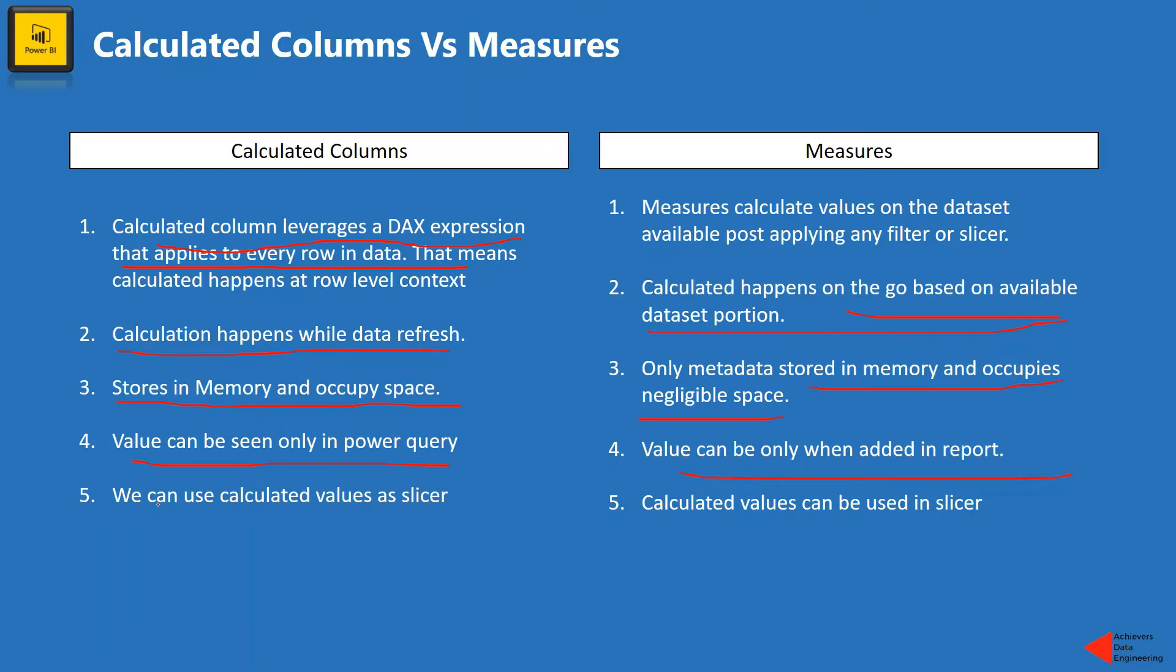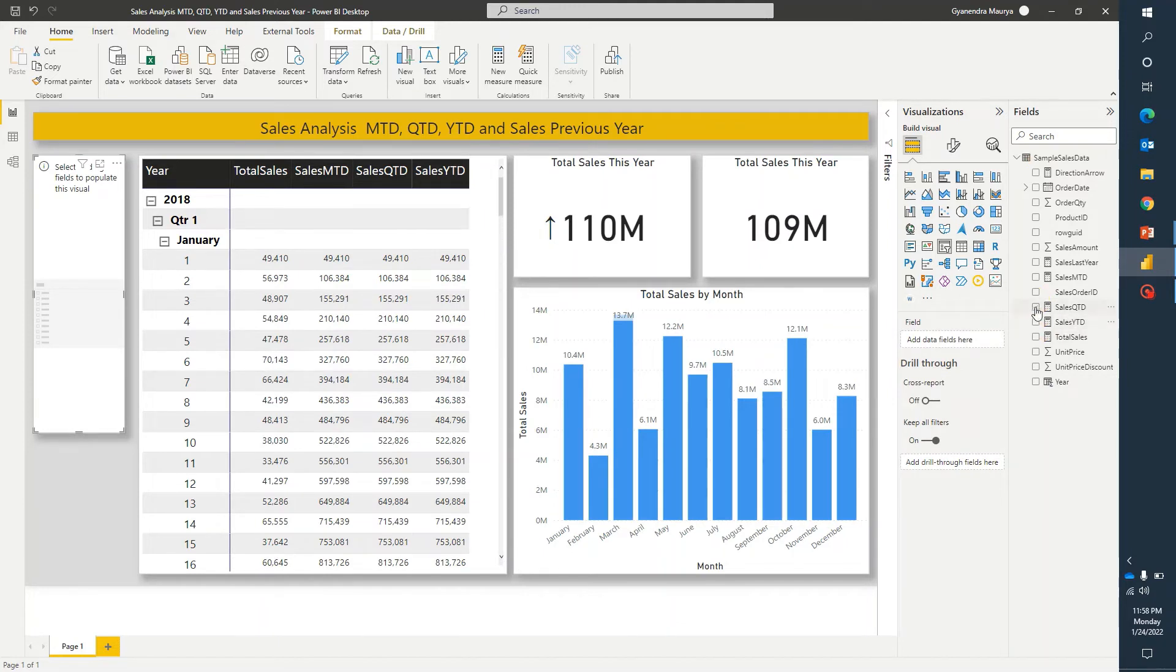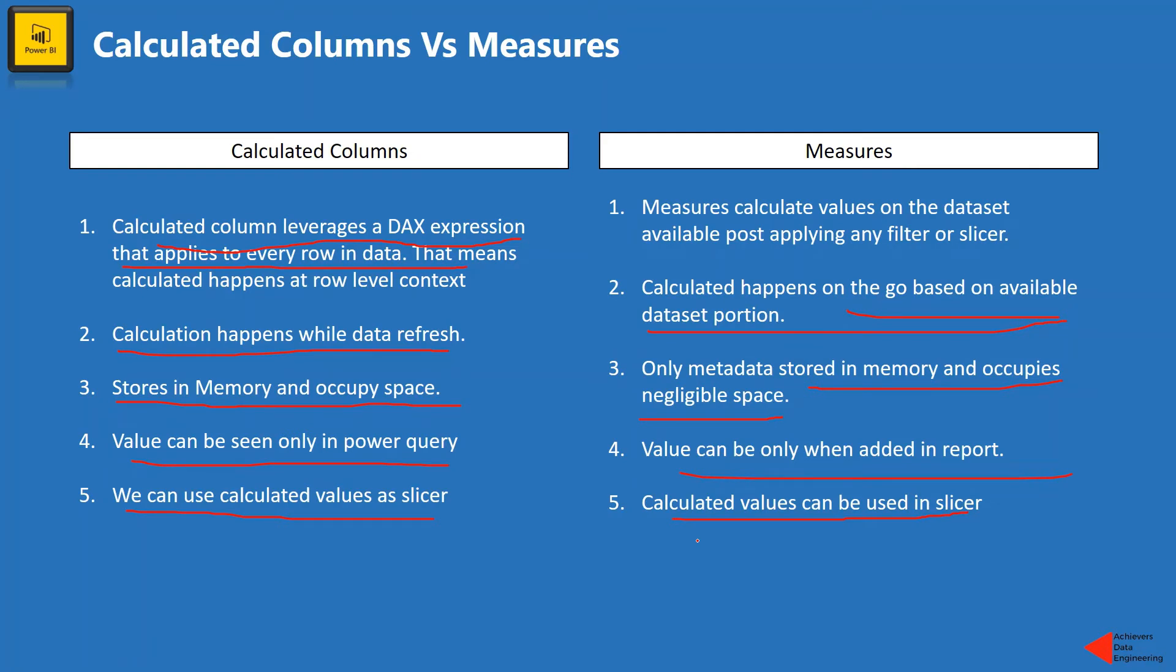Alright. Now talking about another difference, whenever we are creating a calculated column those values can be used as a slicer. However, measures cannot be used as a slicer. So again, coming back to the report, over here, you can see, in this particular slicer, I am using this year column. And this year column is created by using some functions. So it's kind of a calculated column. However, if I go ahead and uncheck this and try to use any measures, then it won't work. Because we cannot use measures as slicers in our report.